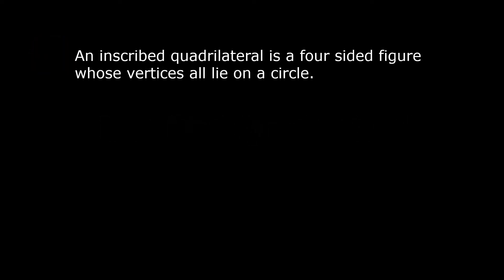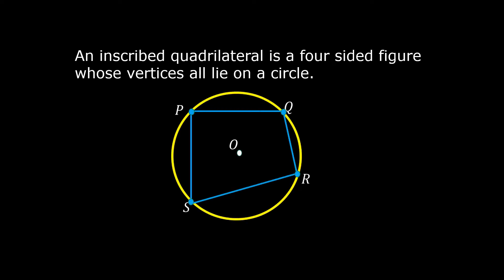In this video, we are going to solve a problem involving an inscribed quadrilateral. An inscribed quadrilateral is a four-sided figure whose vertices all lie on a circle. In the illustration below, the four-sided figure PQRS is an inscribed quadrilateral. Its vertices PQRS all lie on the circle. Let us solve this problem.